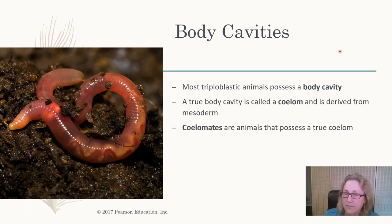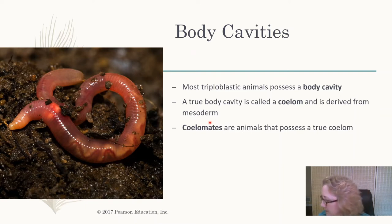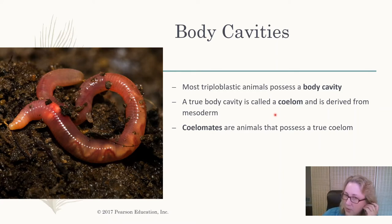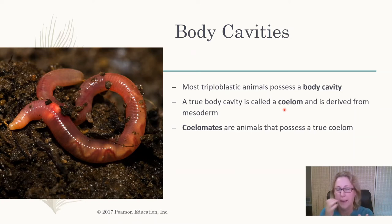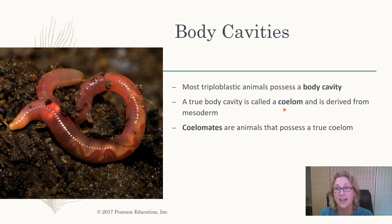Animals also have body cavities, which we call a coelom. The coelom is derived from the mesoderm — it sits between the other two layers. Animals without a coelom are just solid; they have three layers but the mesoderm is solid, sticking to both the endoderm and ectoderm with no cavity. Having a fluid-filled cavity is an advantage.